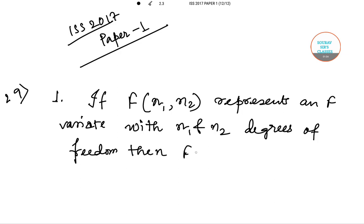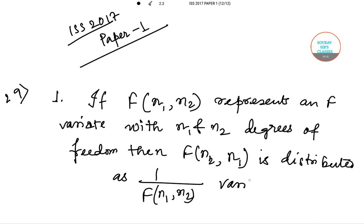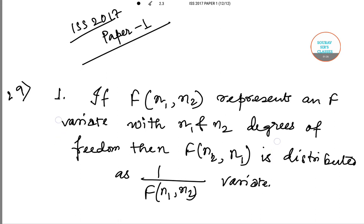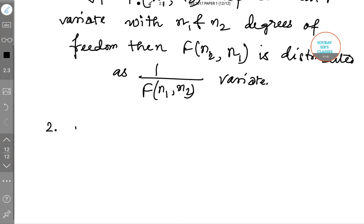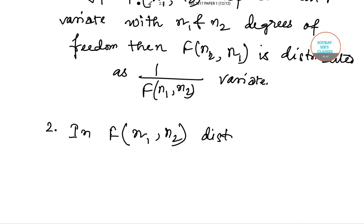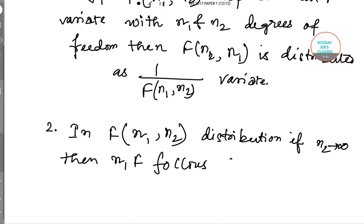then F(n2, n1) is distributed as 1/F(n1, n2) variate. There is another consideration, that is point number 2: in F(n1, n2) distribution, if n2 tends to infinity, then n1·F follows t-distribution with n1 degrees of freedom.